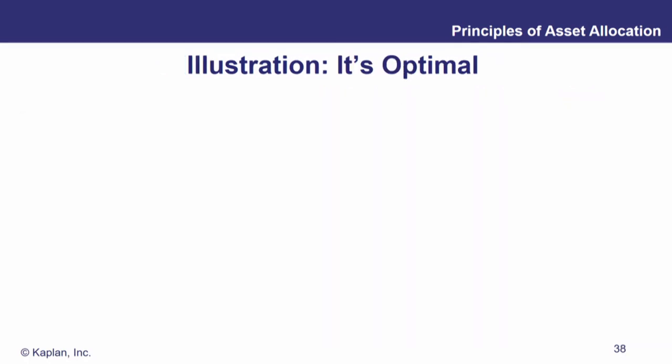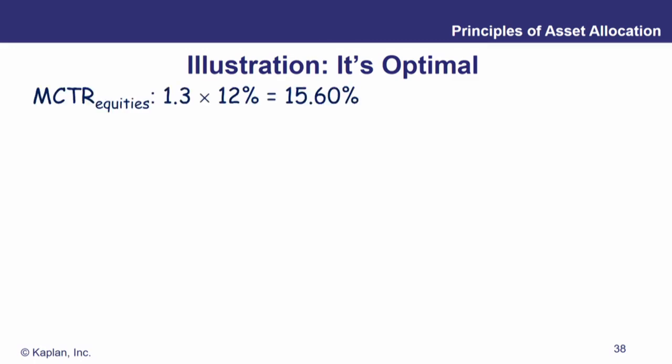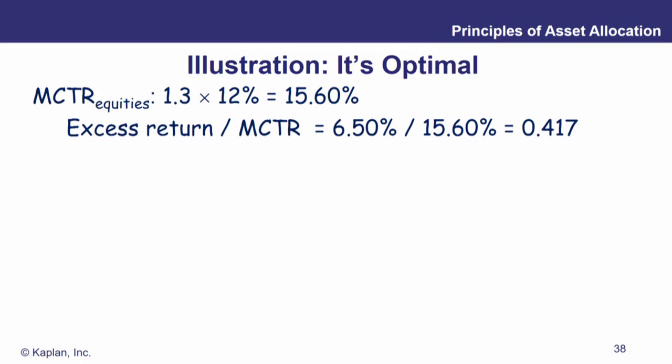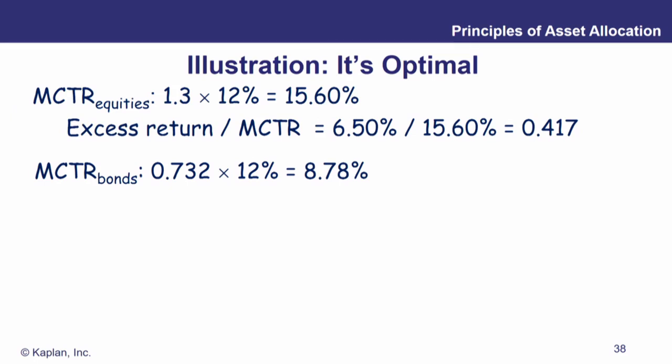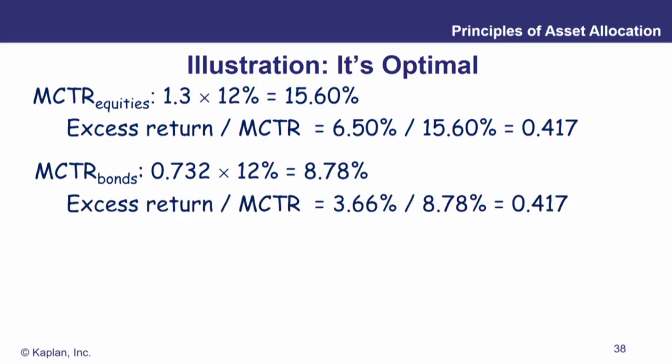Let's see how the numbers work out. For equities, we take the beta of 1.3 and multiply it by the portfolio standard deviation of 12%, giving us an MCTR of 15.6%. The ratio of excess return to MCTR is 6.5% divided by 15.6%, which gives 0.417. For bonds, the beta is 0.732, giving a lower MCTR, but they also had a lower excess return. The ratio of excess return of 3.66% divided by the MCTR gets us to that same value of 0.417. If we've hit the point of optimality, each one of these calculations works out to be exactly the same.